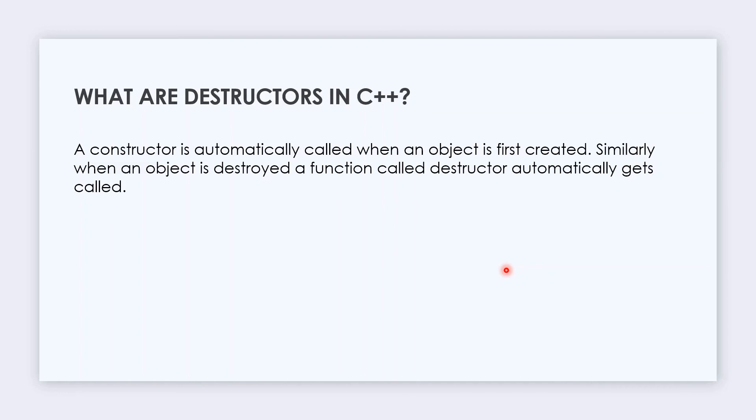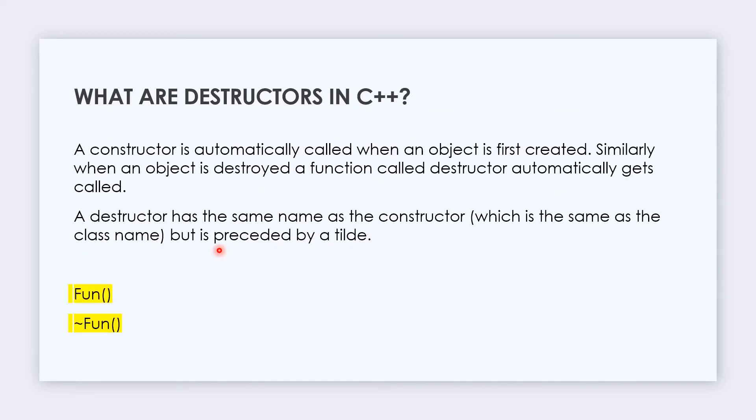What are destructors in C++? A constructor is automatically called when an object is first created. When it destructs, the destructor automatically gets called. A destructor has the same name as a constructor but is preceded by tilde. The tilde sign is over the left side of one numeric character. For example, tilde fun is a destructor and fun is a constructor. Both have the same name as per the definition of constructor and destructor.